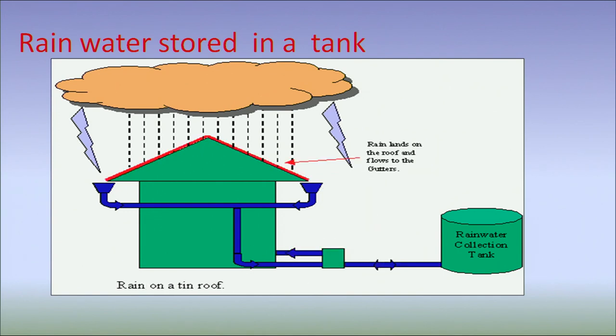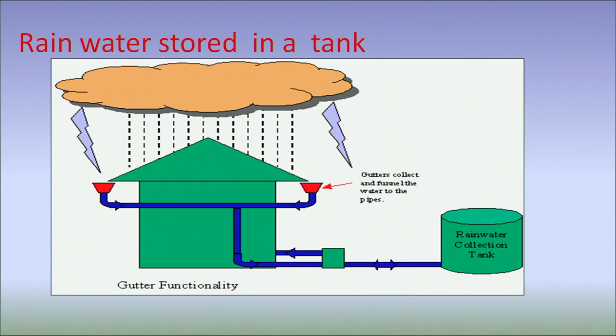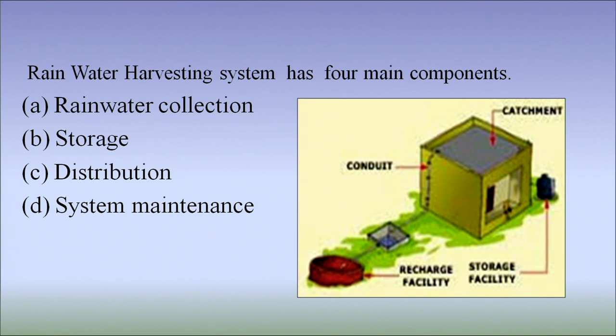There is a filter pump which filters the water and pumps it, and it is collected in a tank. A rainwater harvesting system has four main components: first, collection of rainwater; second, storage; third, distribution; and fourth, maintenance.